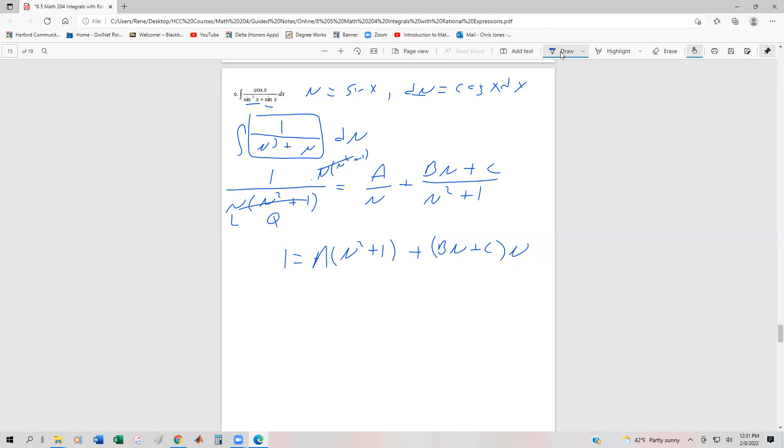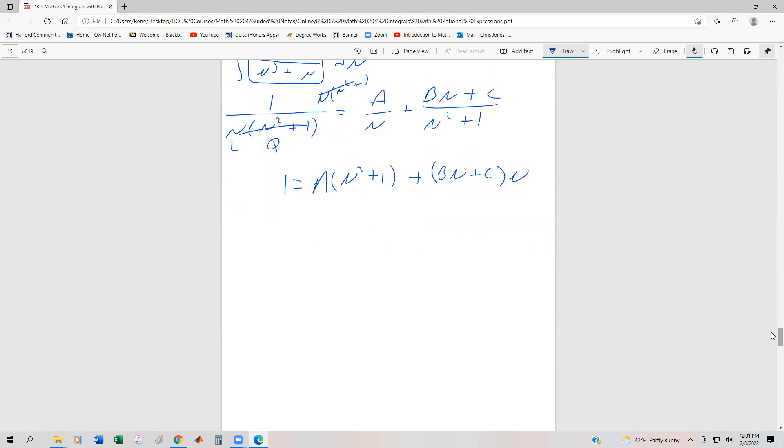Now, in this case, let's use the matrix method or the system method to be able to solve this just because it seems like it's going to be a little bit easier than trying to find nice numbers. We could probably find easily that A is one,